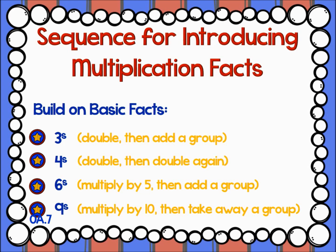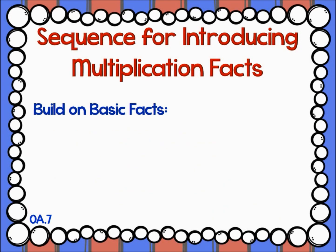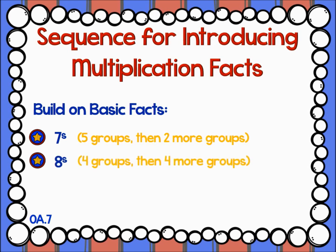We would hope that students eventually stop relying on these strategies and commit the facts to memory. However, we want students to know these strategies so that they have a means for accessing the product even when they cannot remember it. Once those easier strategies are mastered, teach the remaining strategies, which are a little bit trickier to use. For 7's, multiply your number by 5, then multiply your original number by 2, and add the two products together. For 8's, multiply your number by 4, then multiply your original number by 4 again, and add those two products together.